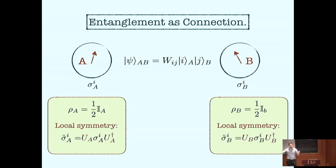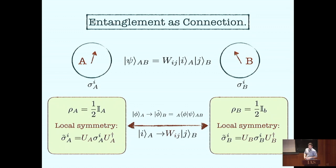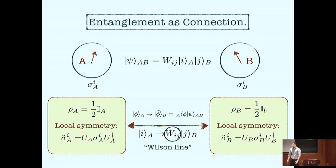Another way of thinking about it is that this entangled state defines a map between a state in Alice's Hilbert space and a state in Bob's. Written in terms of some bases, W_IJ — the coefficients — serve as this map between the bases. For this reason, I want to think of W_IJ as a Wilson line, an entanglement Wilson line. It transforms as an open Wilson line that connects A and B, and it does the same role as a connection usually does: it relates two frames.